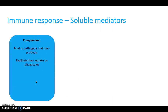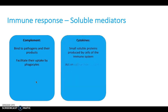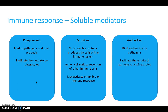The complement system binds to pathogens and their products and facilitates their uptake by phagocytes. Cytokines are small soluble proteins produced by cells of the immune system; they act on cell surface receptors of other immune cells and may activate or inhibit an immune response. Antibodies bind and neutralize pathogens and facilitate the uptake of pathogens by phagocytes.